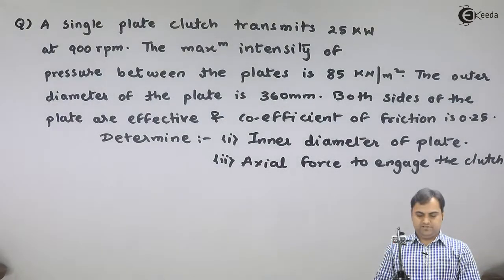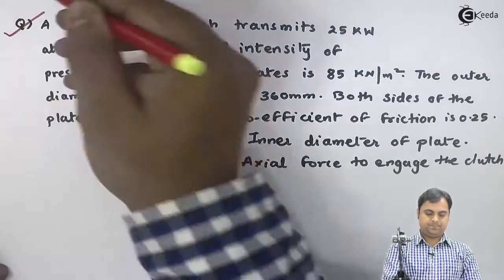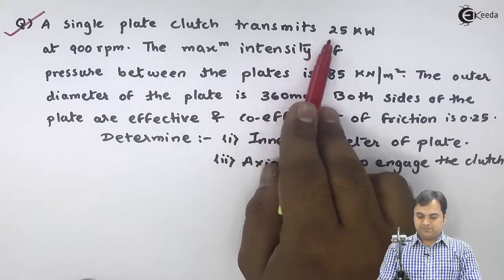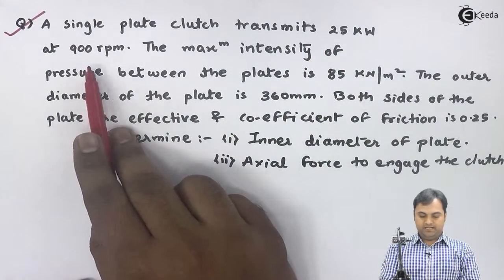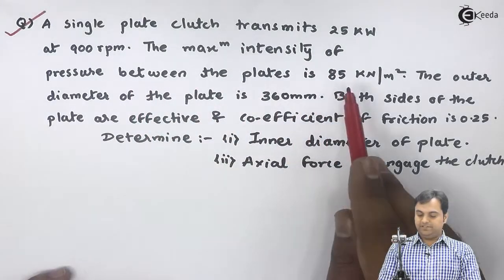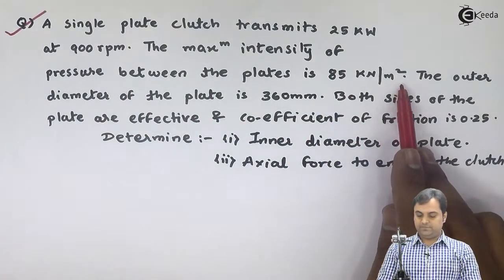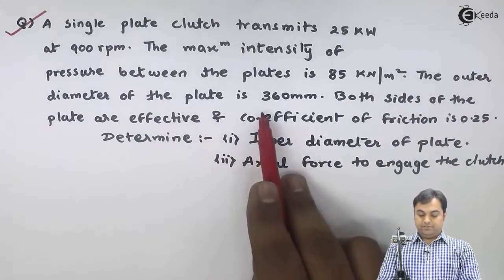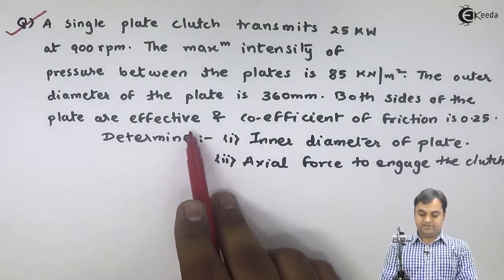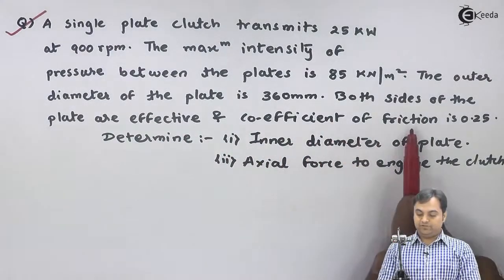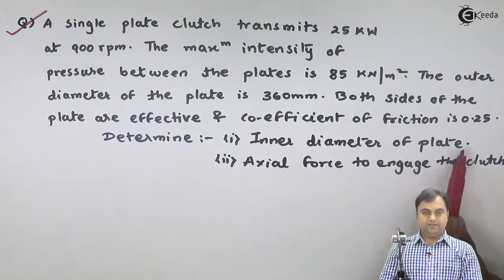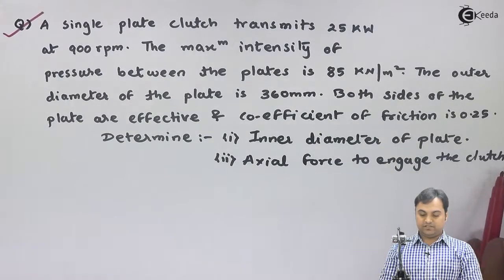Let us take the next problem on single plate clutch. A single plate clutch transmits 25 kilowatts at 900 rpm. The maximum intensity of pressure between the plates is 85 kN per meter square. The outer diameter of the plate is 360 mm. Both sides of the plate are effective and coefficient of friction is 0.25. Determine inner diameter of the plate and axial force to engage the clutch.